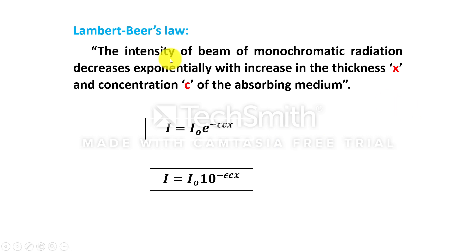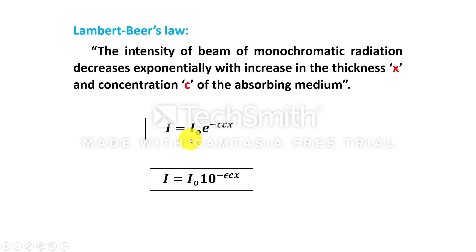With this observation, we can see the statement given by Beer-Lambert's law. According to the law, the intensity of a beam of monochromatic radiation decreases exponentially with the increase in the thickness of the medium and concentration of the absorbing medium. This is the mathematical expression of Beer-Lambert's law: I = I₀ e^(−εcx), or I = I₀ × 10^(−εcx).